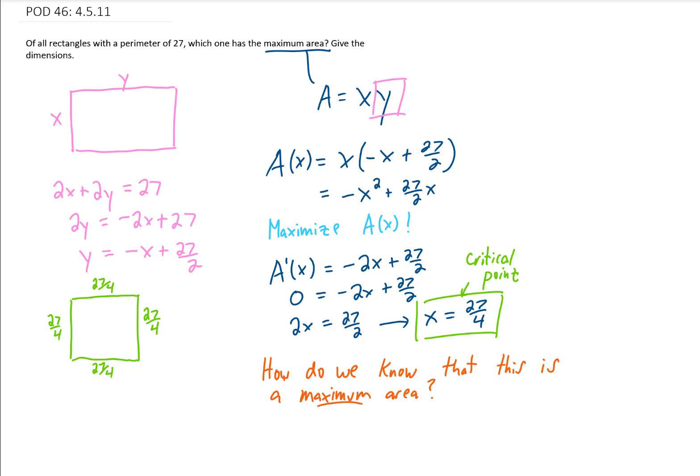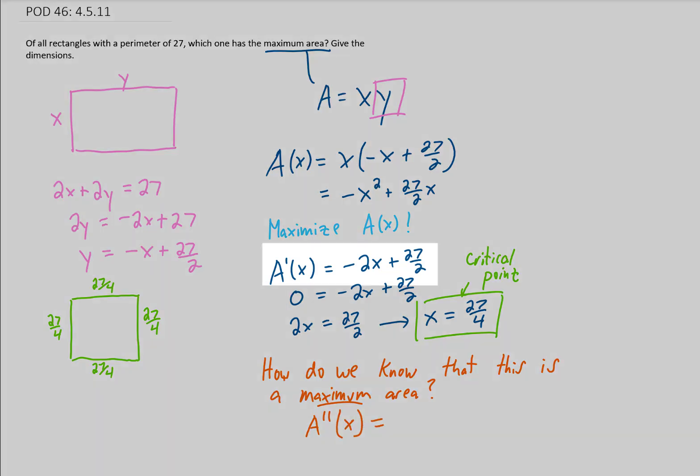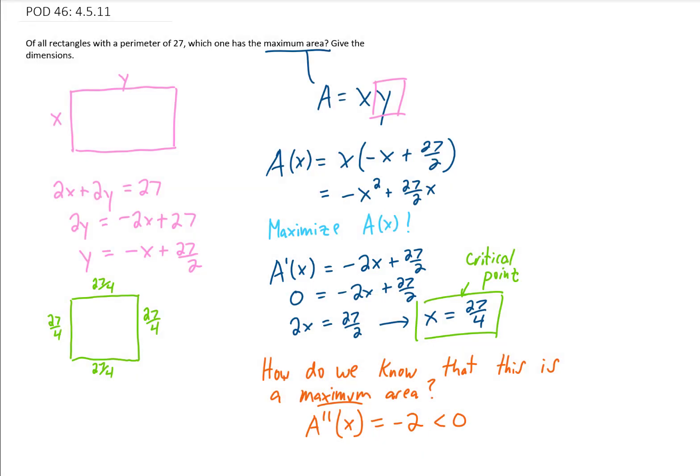Well, there are several ways to answer this question. The simplest way to answer this question is probably by the second derivative test. If we take a second derivative of our area function, we look up here at our first derivative, our second derivative is just going to be negative 2. Because this is negative, the second derivative test says that this critical point represents a maximum.